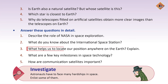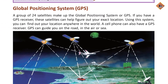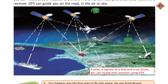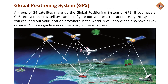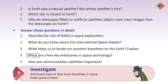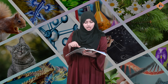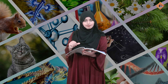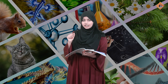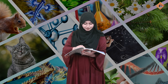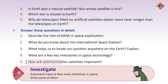Which system helps us to locate a position everywhere on the Earth? It is GPS — we will write about GPS. What are a few key milestones in space technology? We were taught key milestones — you have to read all the milestones and make notes.